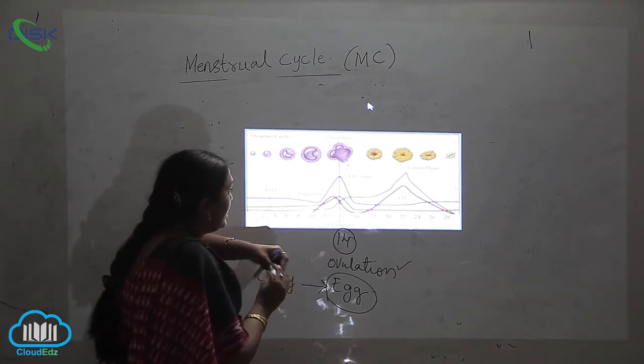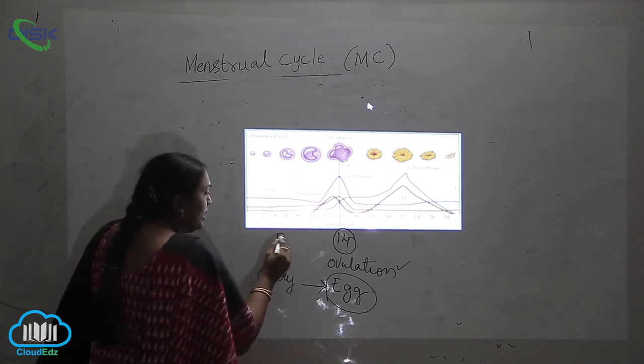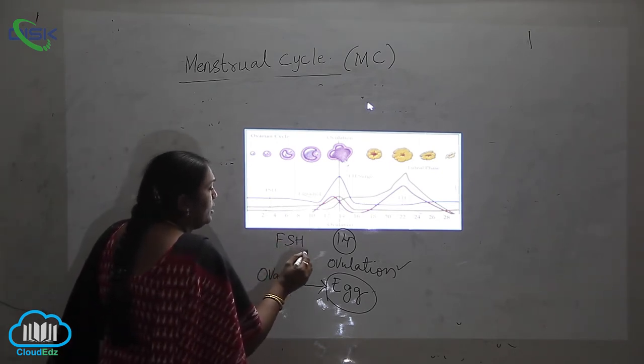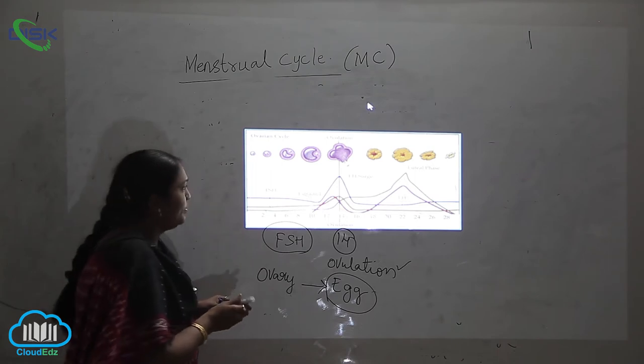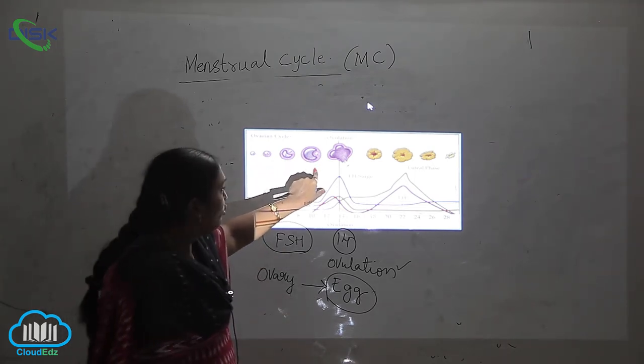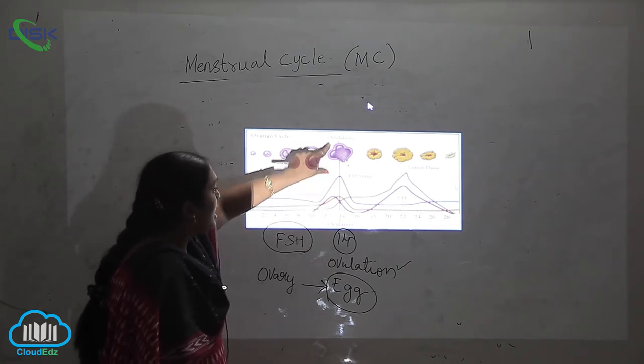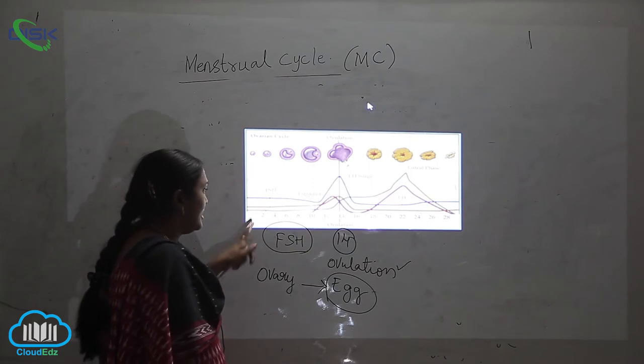So this is under the influence of which hormone? This is under the influence of follicle stimulating hormone. Now you can see these are all the different types of follicles. On the 14th day the ovulation occurs and the egg is released. Can you see?